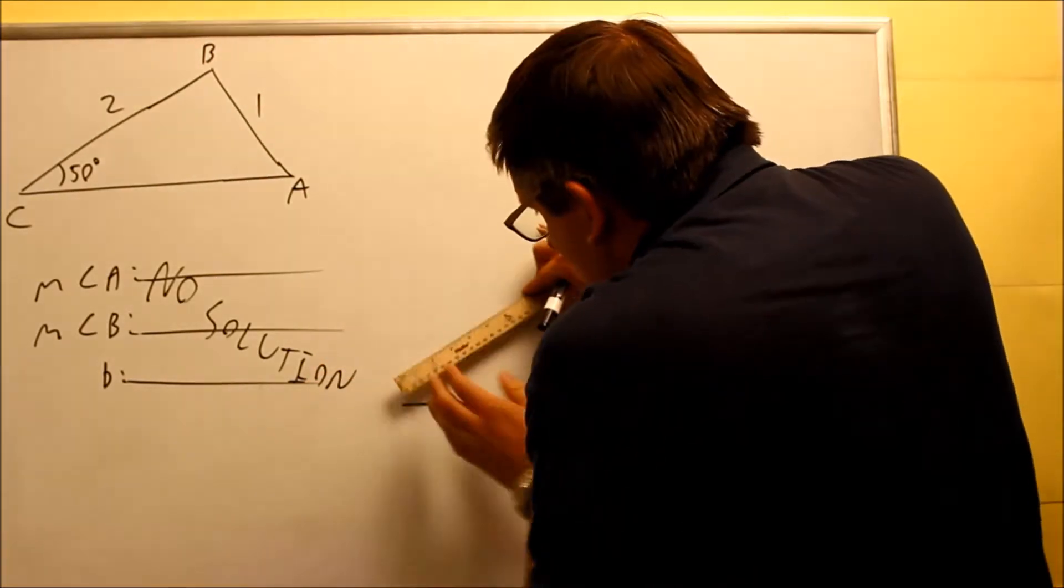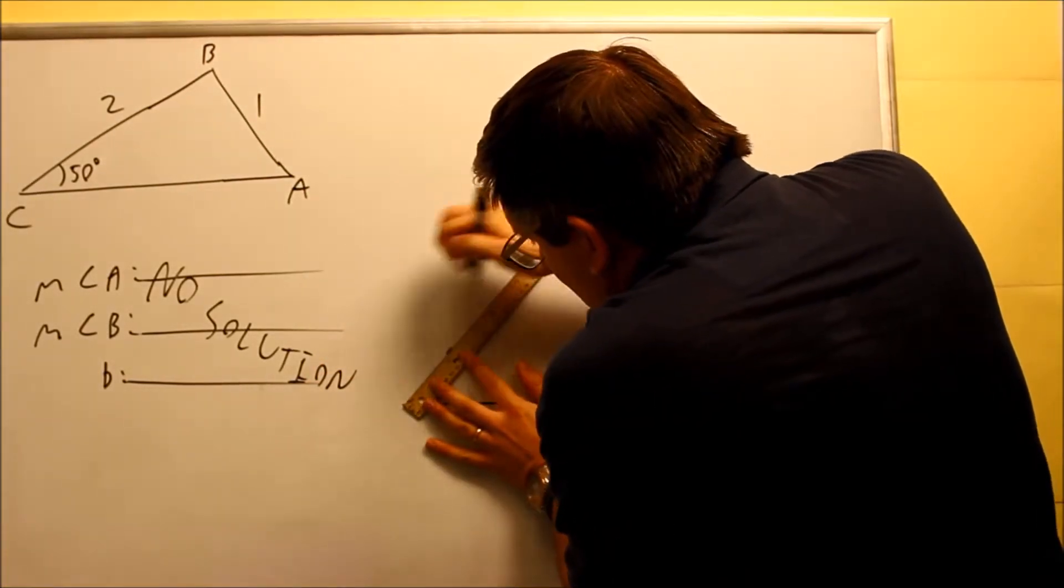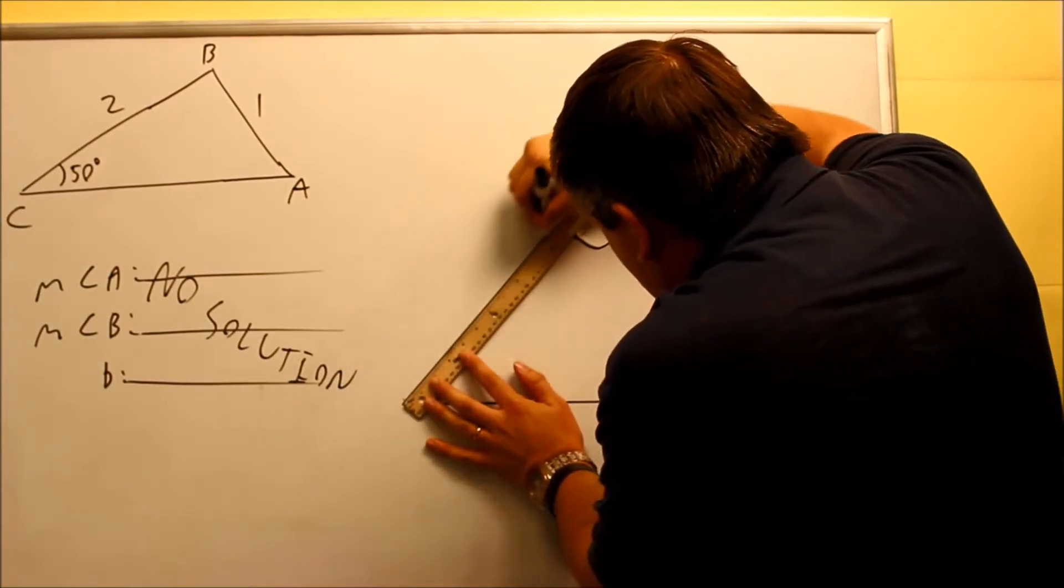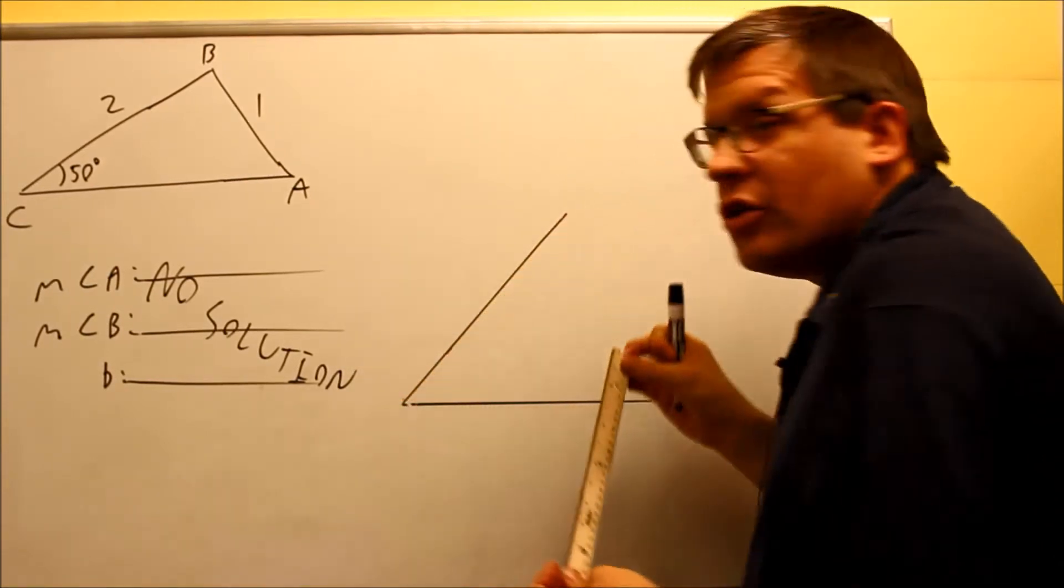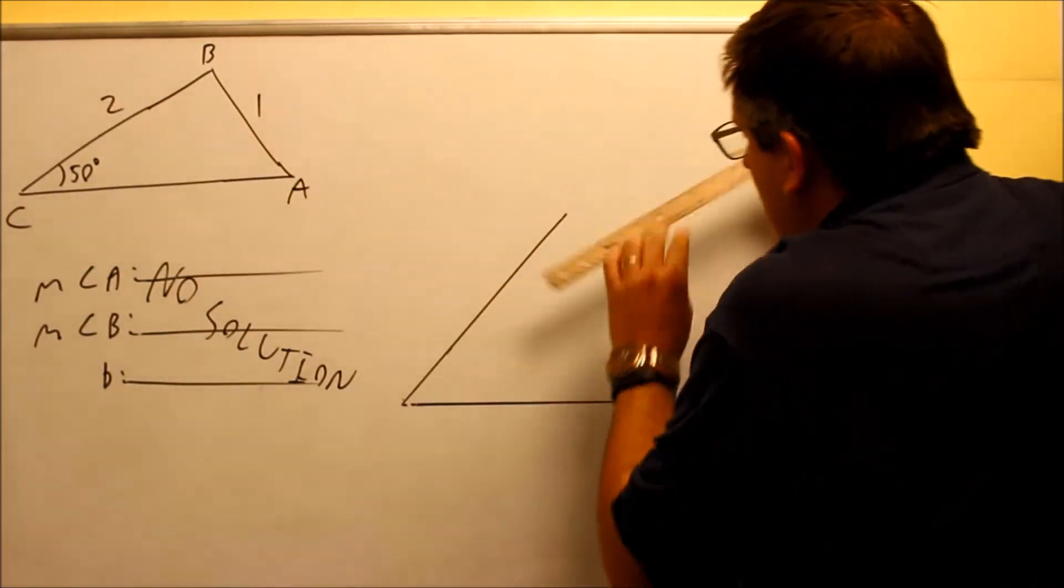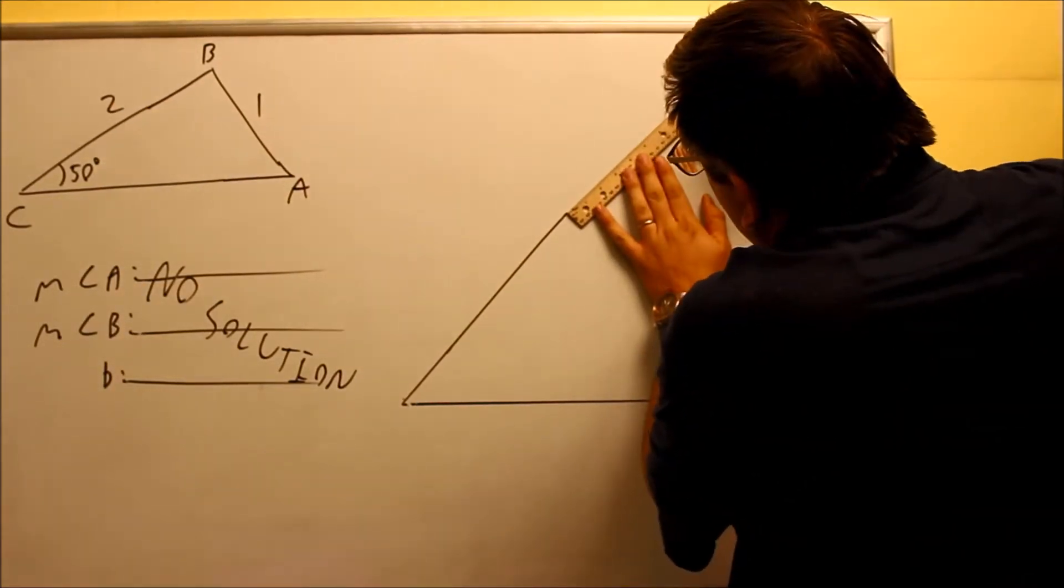The ruler, I'm going to go ahead and let that equal one ruler is going to represent one unit. So because I have a two here, I have to draw out one more, and that's going to take me up to here.